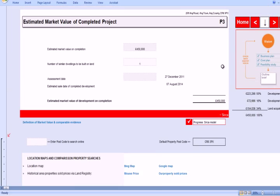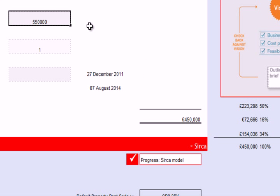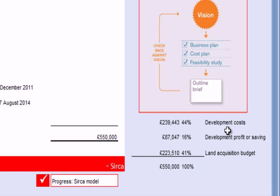That helps us arrive at a particular value, so we can double-click and update our assessment of what we think the value will be. That value then feeds through to a summary, which is divided into three main sections: the development costs — the physical costs to build the property including professional fees, local authority costs, interest charges, and financing costs — a developer's profit, and then what's left is a land acquisition budget, giving us an idea of how much the piece of land will generate in revenue. This is a very early stage assessment.